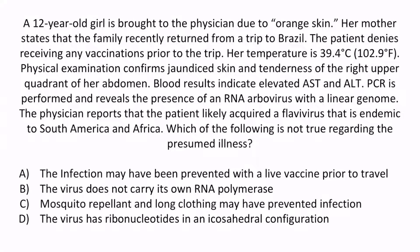Let's wrap up with a question. A 12-year-old girl is brought to the physician due to orange skin. Her mother states the family recently returned from a trip to Brazil. The patient denies receiving any vaccinations prior to the trip. Her temperature is 39.4°C (102.9°F). Physical examination confirms jaundiced skin and tenderness of the right upper quadrant of her abdomen. Blood results indicate elevated AST and ALT. PCR reveals the presence of an RNA arbovirus with a linear genome. The physician reports the patient likely acquired a flavivirus endemic to South America and Africa. Which of the following is NOT true regarding the presumed illness? A. The infection may have been prevented with a live vaccine prior to travel. B. The virus does not carry its own RNA polymerase. C. Mosquito repellent and long clothing may have prevented infection. Or D. The virus has ribonucleotides in an icosahedral configuration.